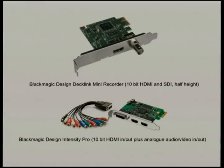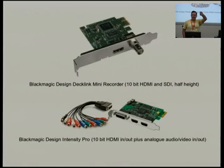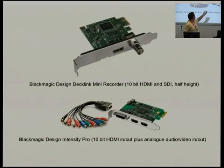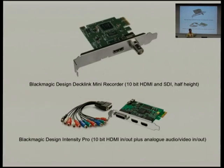These are the Blackmagic cards. The newer one came out in April last year and it's half-height, so you can make nice small PCs with it. It's got SDI in for professional cameras and 10-bit HDMI in. There's also a mini monitor product that outputs HDMI signal, and there are GStreamer plugins for it. The older Intensity Pro is more expensive but has lots of analog inputs. We found the newer ones are perfect — cheaper and half height.